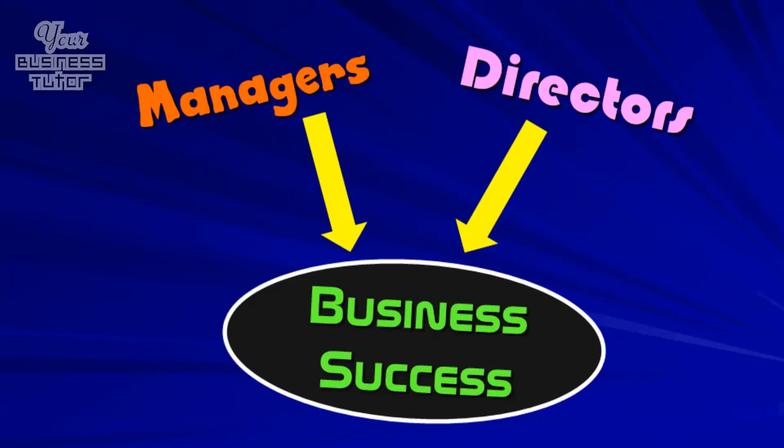A third internal stakeholder would be managers or directors. And they are interested in the business doing well. This is because if the business is doing well, the owners or shareholders will be happy with their performance. And as such, just like employees, they will have job security and higher pay.